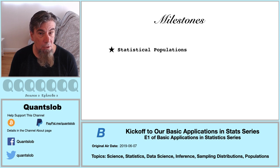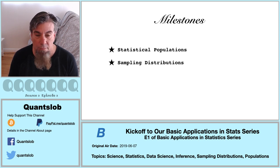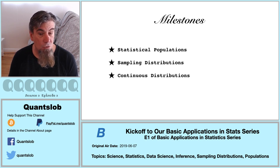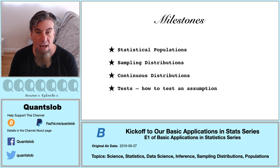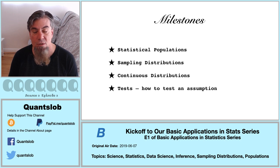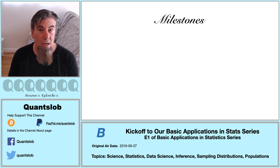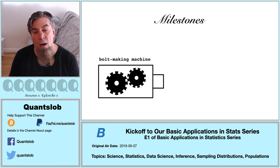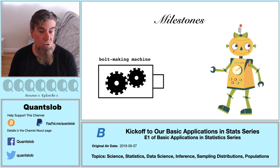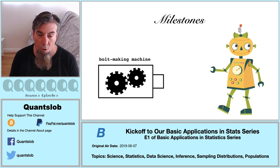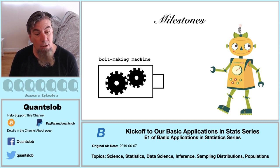It may surprise a lot of people that learning the art of statistics really involves a fairly modest handful of conceptual milestones: understanding statistical populations, probability sampling distributions, continuous attributes or variables and their distributions, and statistical tests — that is, testing an assumption. For example, comparing an observation or experience against a sampling distribution. This idea of testing or comparing assumptions with observations plays out throughout science, whether we're experimental designers checking if a bolt-making machine works properly, or AI engineers building a reinforced learning algorithm for a robot.